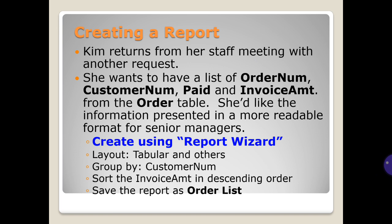Creating a report: Kim returns from her staff meeting with another request. She wants a list of order number, customer number, paid, and invoice amount from the order table, presented in a more readable format for senior managers. Create using the Report Wizard with layout tabular, group by customer number, sort by invoice amount, with order number in ascending order, and save the report as 'order list'.